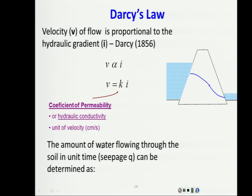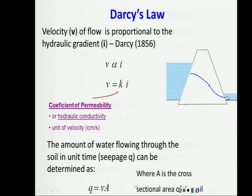Since hydraulic gradient is non-dimensional, k must have units of velocity — centimeters per second, inches per second, etc. To calculate the amount of water flowing through the soil per unit time — the seepage q — you multiply velocity v by the cross-sectional area A perpendicular to the flow. Emphasis: A must be the cross-sectional area perpendicular to the flow direction.